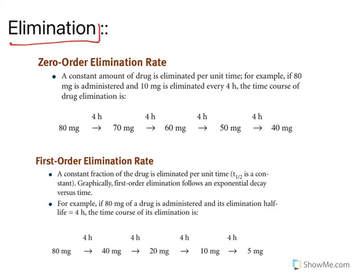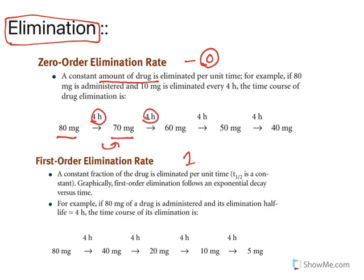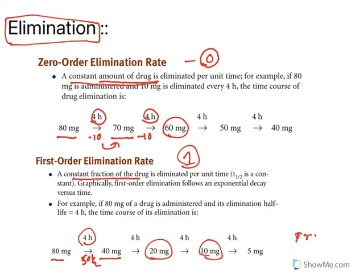Finally, elimination. The major route is renal elimination, and it follows two kinetics: zero order and first order. In zero order elimination kinetics, a constant amount of drug is eliminated per unit time — for example, if 80 mg is present, 10 mg goes out every four hours regardless. In first order kinetics, a constant fraction is eliminated — for example, out of 80 mg, 50% (40 mg) is eliminated, then 50% of 40 mg (20 mg), and so on. Most drugs follow first order kinetics. Zero order results from saturation of the elimination mechanism (e.g., enzyme saturation).